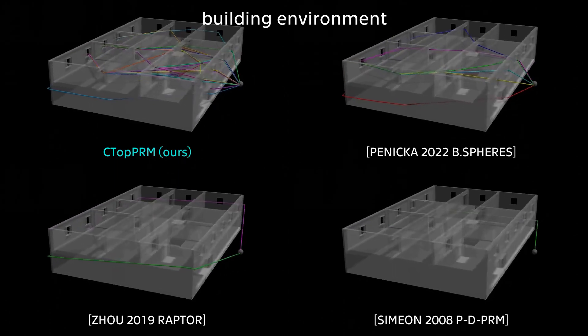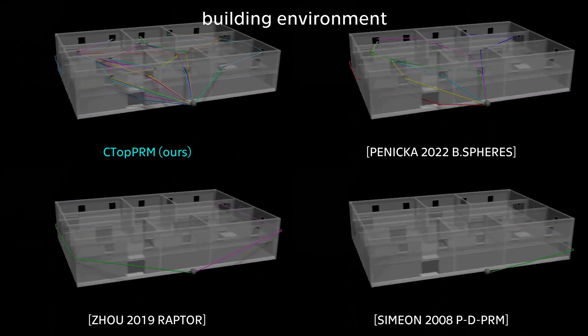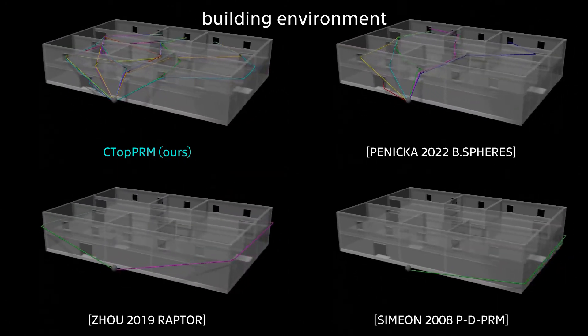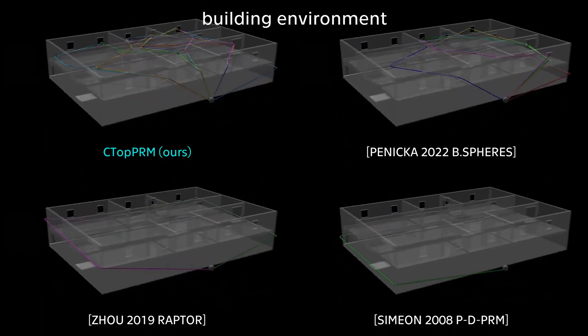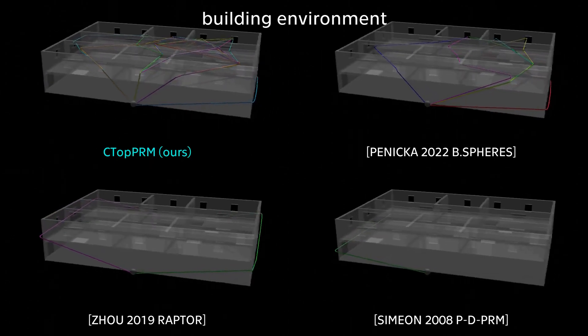In more complex environments with a higher number of distinct homotopy classes, we improve the average number of homotopy classes detected within the same time by 30% to 300%, depending on the scenario.